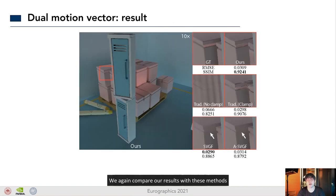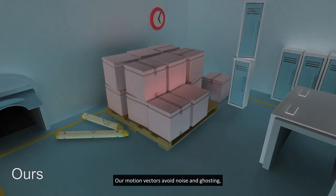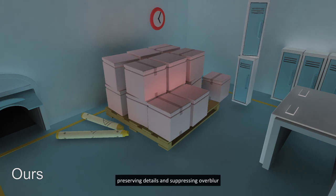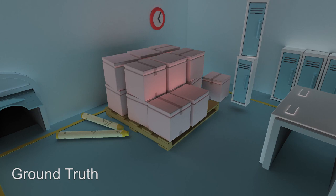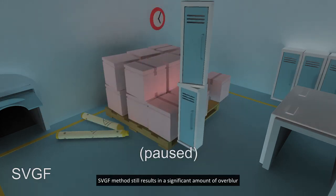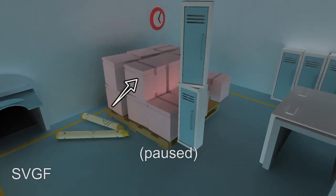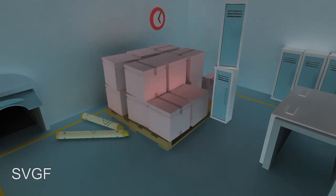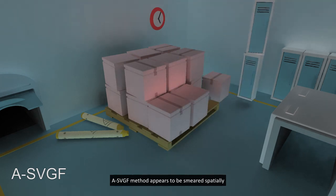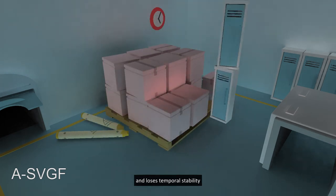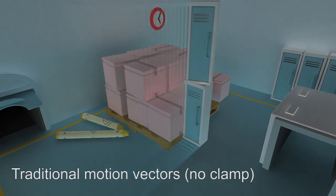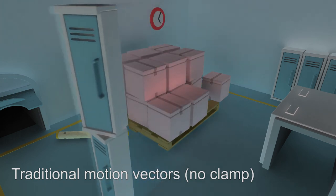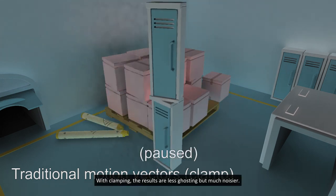We again compare our result with these methods. Our motion vectors avoid noise and ghosting, preserving details, and suppressing overblur. We produce a closer result to the ground truth. SVGF methods still result in significant amount of overblur. The ASVGF methods appear to be smeared specularly and lose temporal stability. The traditional motion vector introduce ghosting artifact. With clamping, the results are less ghosting but much noisier.